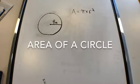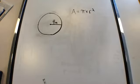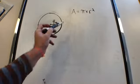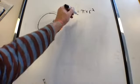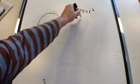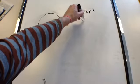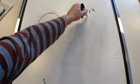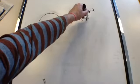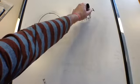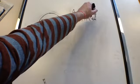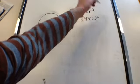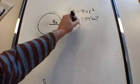Today we are going to calculate the area of a circle. The formula for area of a circle is pi times radius squared. Pi in this case is 3.14, and we're going to multiply it by our radius, which is 4 meters, and we're going to square that.